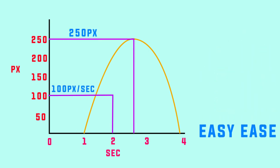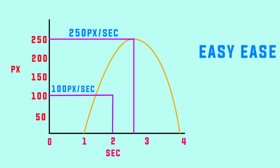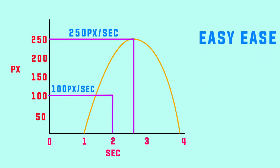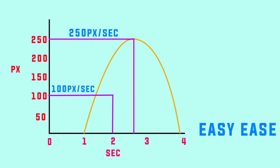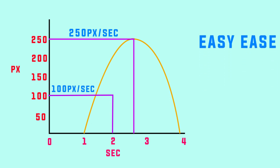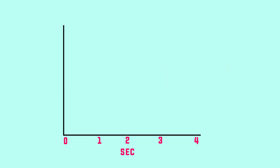First it is 100 pixels per second. The curve goes up to 250 pixels per second. This is the eases. This is the value graph editor. This is the graph editor — the seconds and the pixels.